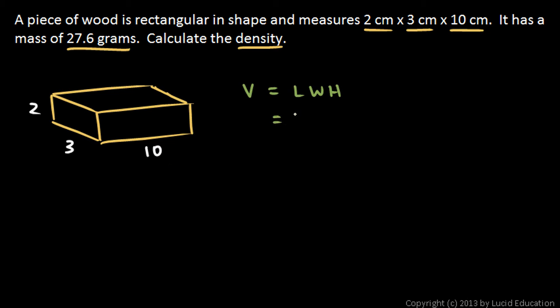So that's 2 centimeters by 3 centimeters by 10 centimeters. And this is pretty easy: 2 times 3 is 6, times 10 is 60, and centimeters times centimeters times centimeters gives us centimeters cubed. So that's the volume: 60 centimeters cubed.